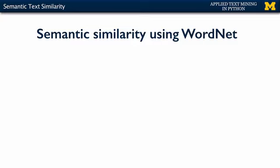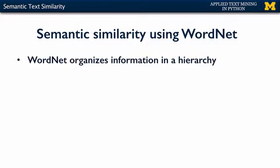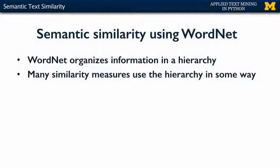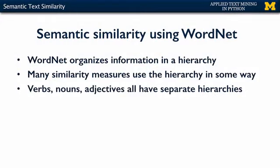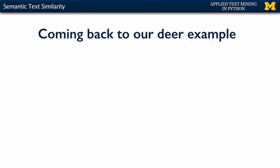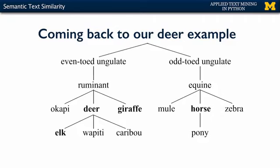So how do you use WordNet for semantic similarity? WordNet organizes information in a hierarchy — a tree. You have a dummy root on top of all words of the same part of speech, so nouns have a dummy root, verbs have a dummy root. Taking our deer example: elk, wapiti, and caribou are all types of deer. Deer and giraffe are siblings in this tree hierarchy because they are both ruminants. And horse is related but not in the same sub-hierarchy — deer and horse are both ungulates, but they are not siblings.